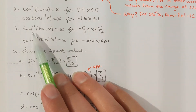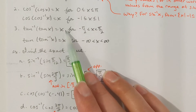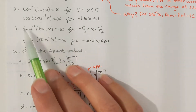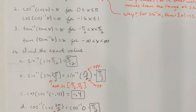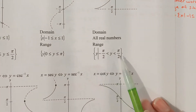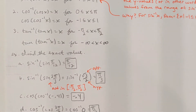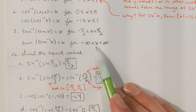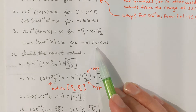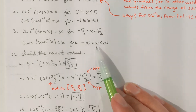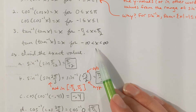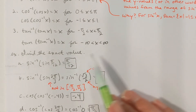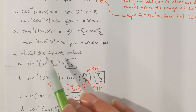Tangent x and tangent inverse of x are also inverses of each other, so when you plug each one into the other, you're going to get x. Tangent inverse of tangent x is x for when x is ranging from negative pi over two to pi over two — that is the range of the tangent inverse function. And tangent of tangent inverse of x is x for when x is any real number, since the graph of y equals tangent x covers the entire real number line on the y-axis.